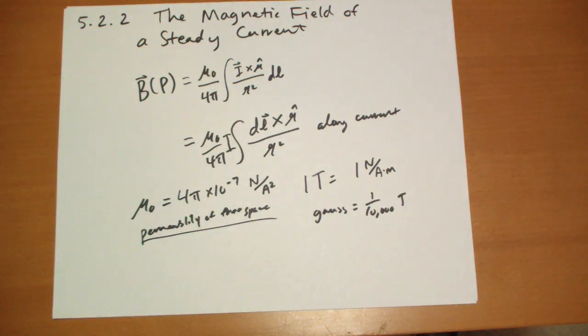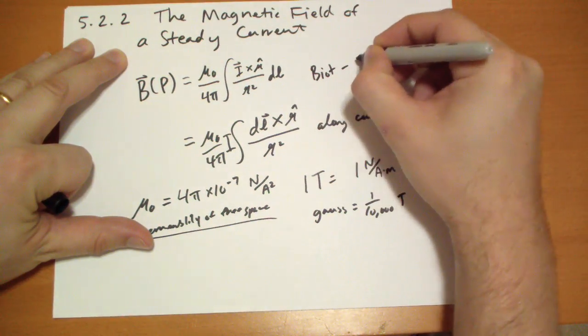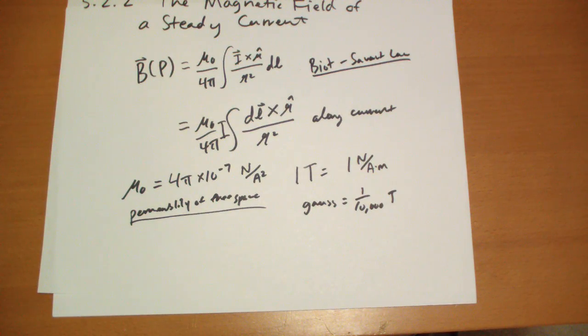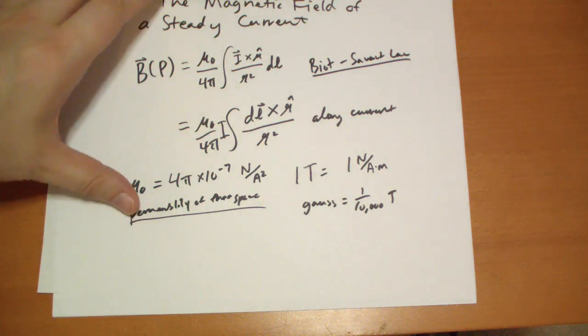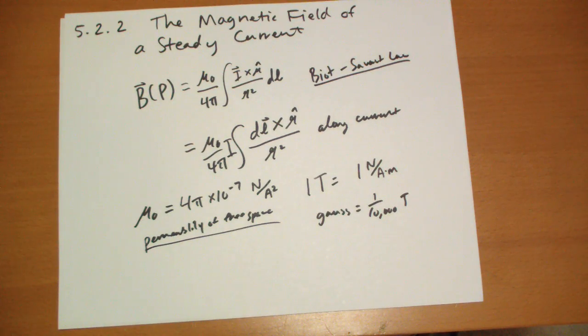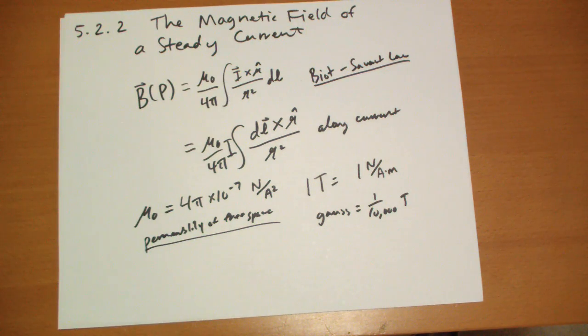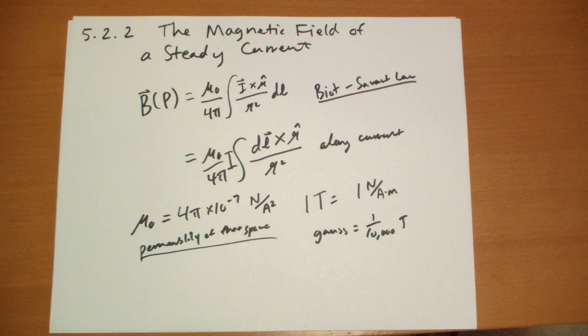So the Biot-Savart law - this is what this is - is a fundamental law much like Coulomb's law. We're not taking any time to derive it here. Hopefully you've already taken the physics courses that showed you why it has to be the way it is. But this is basically the law that gives us all the different things, plus the law we already discussed for how magnetic fields interact with moving charges. These two laws together give you how a moving charge interacts with a moving charge through the medium of the magnetic field.